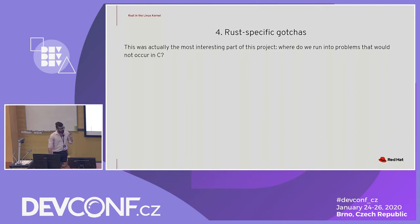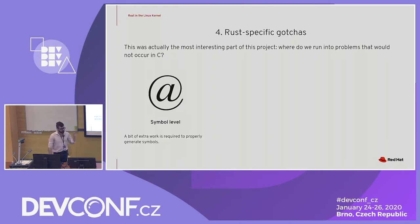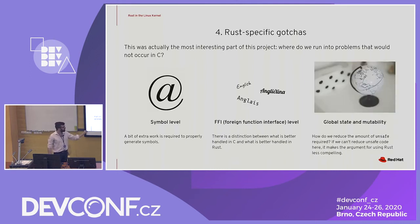Now we're going to talk about some Rust-specific gotchas. This is really defined in three different levels: we're going to have the symbol level, the foreign function interface level, and then global state and mutability.